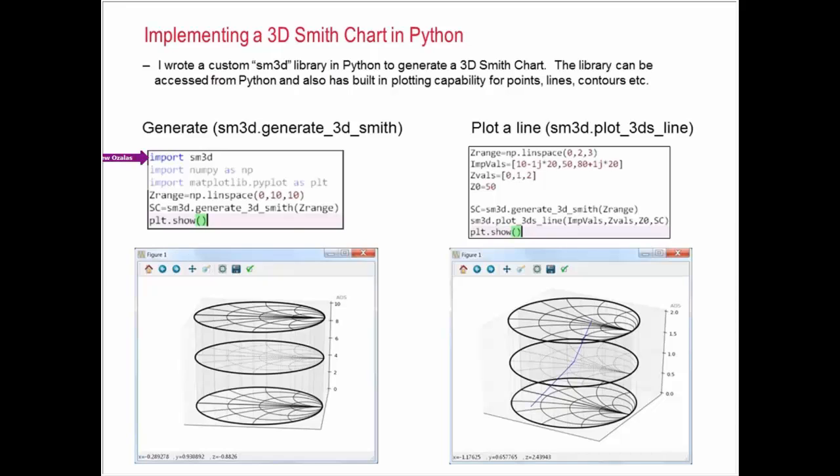In addition to just generating a 3D Smith Chart, I can plot points and lines and things on it as well. It's pretty easy once you've got it all set up. If you've got the library, you just say import SM3D, and then you give it a Z axis range. In this case, I would space it from 0 to 10. Then you just say generate 3D Smith Chart, and magically a 3D Smith Chart would pop up.